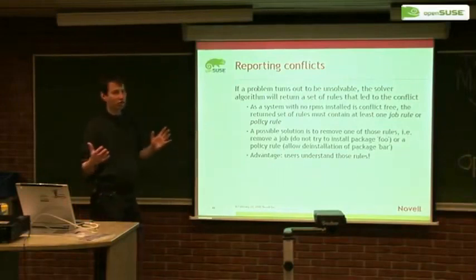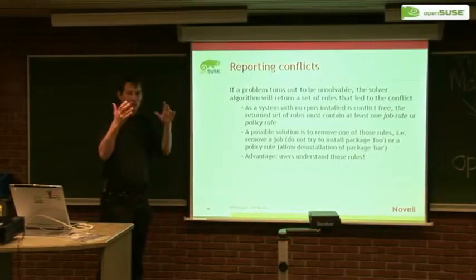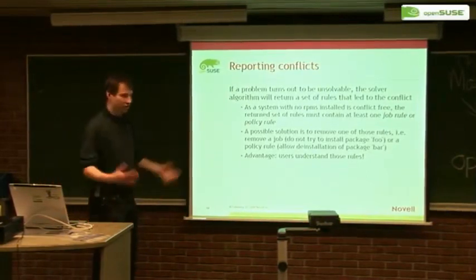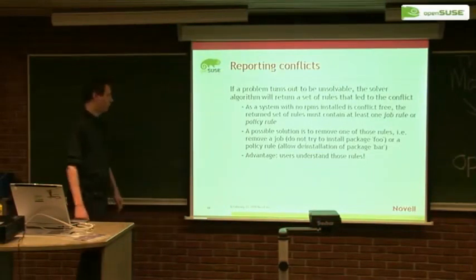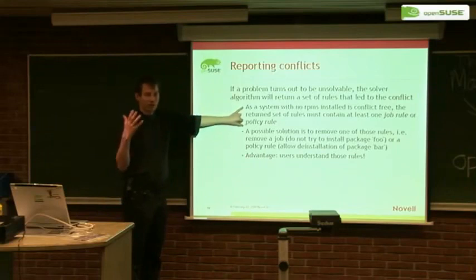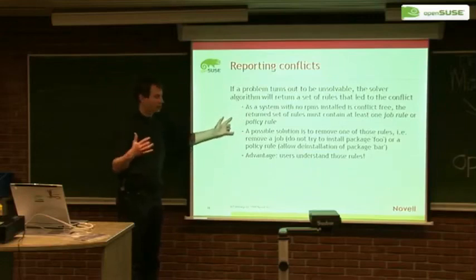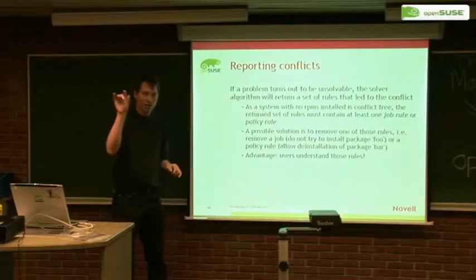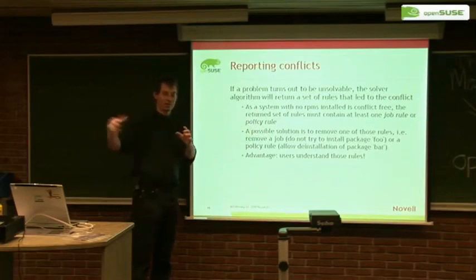Normally with those system rules you get unresolvable problems, because maybe you want to install the community version of a package which needs something from another repository, and then you get an unresolvable problem and want to ask the user: is it okay to switch vendor? This is done with the standard problem reporting mechanism. The trick is: if I look only at the RPM dependencies, the system is always solvable. So if I find the system is unresolvable, there must be at least one job rule — something the user clicked to install or erase — or a policy rule involved in the proof.